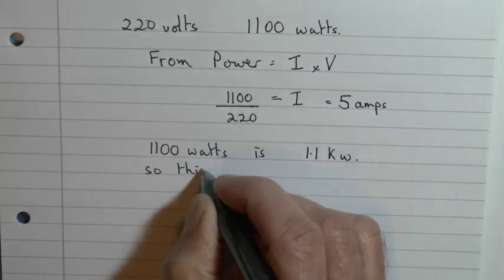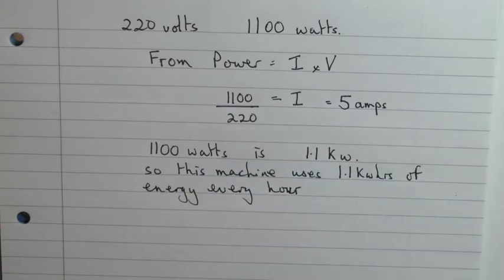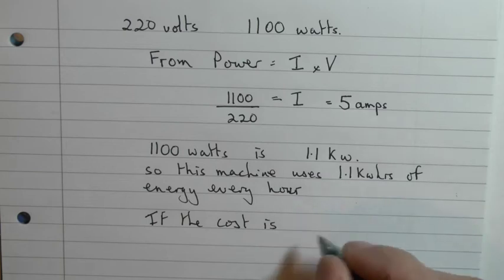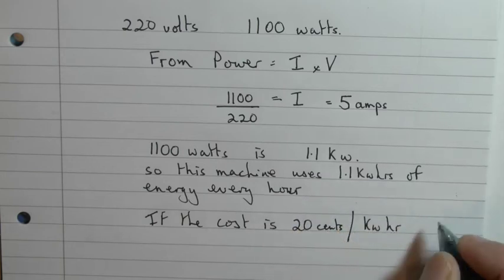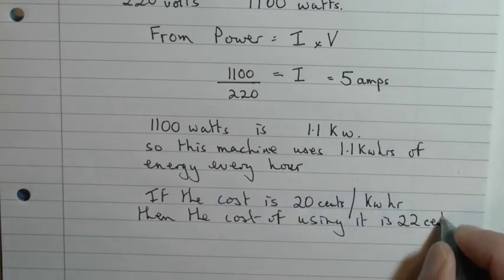1100 watts is 1.1 kilowatts. So in an hour it will use 1.1 kilowatt-hours. Supposing the cost of that unit of electricity was 20 cents or 20 pence, that would be 20 times 1.1, 22 pence or cents per hour.